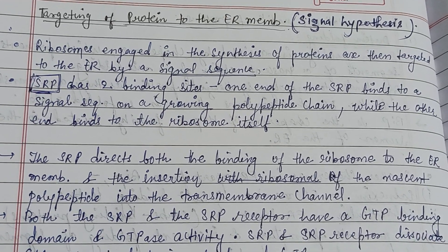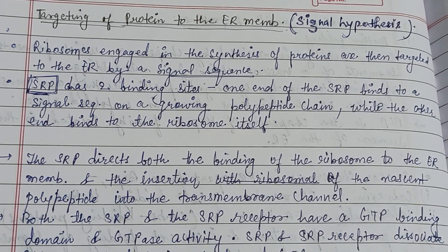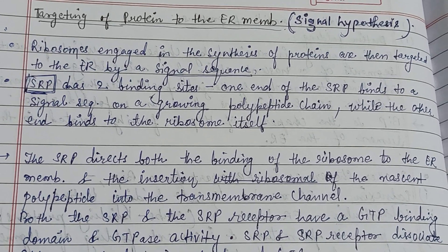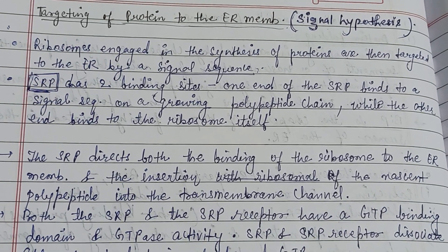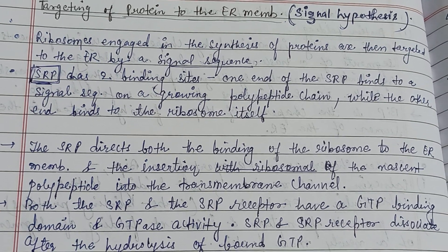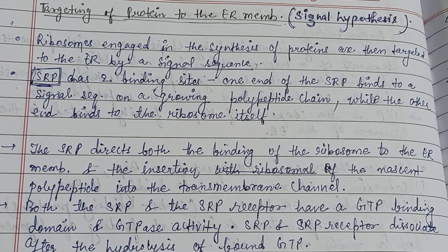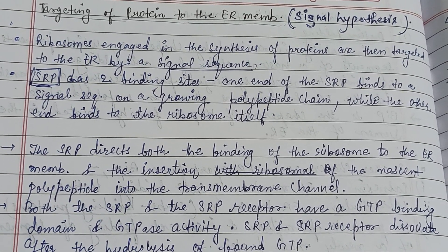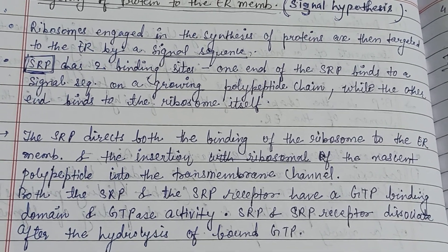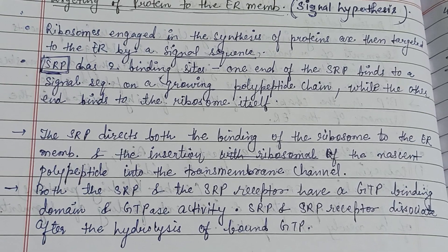For this video, we are going to discuss the signal hypothesis — that is, the targeting of proteins to the ER membrane. Ribosomes engaged in the synthesis of a protein are targeted to the ER membrane by a signal sequence. The signal sequence is a short stretch of polypeptide, about 20 to 35 amino acids long, present at the N-terminus of the growing polypeptide chain.